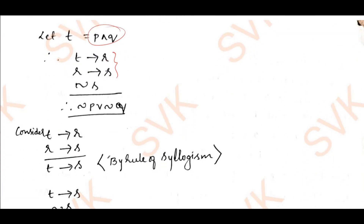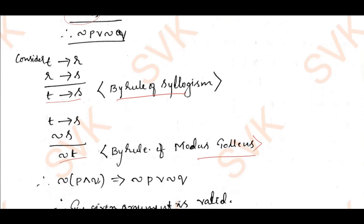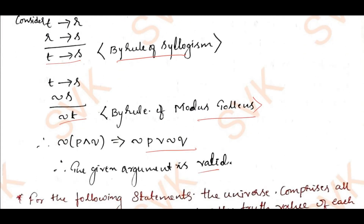Considering the first two premises, by the rule of syllogism: t implies r and r implies s gives t implies s. Taking t implies s together with negation s, by the rule of modus tollens we get negation t. But t is p conjunction q, so negation t equals negation(p conjunction q), which by De Morgan's law equals negation p disjunction negation q. Therefore the given argument is valid.